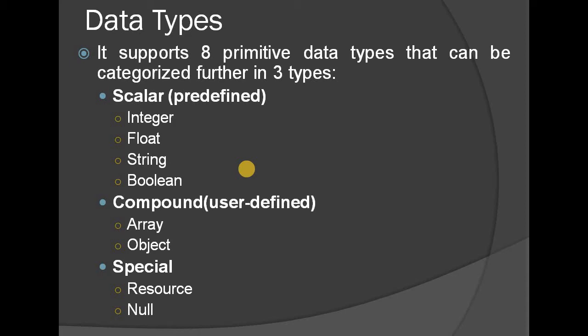The 3 categories are scalar type, compound type, and special type. Scalar type is predefined.